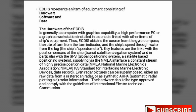Thus, ECDIS obtains a course from the gyrocompass, the rate of turn from the turn indicator, and the ship's speed through water from the log. Key features are the links with the position sensors of the ship, transit satellite navigation system, and in particular with the GPS.